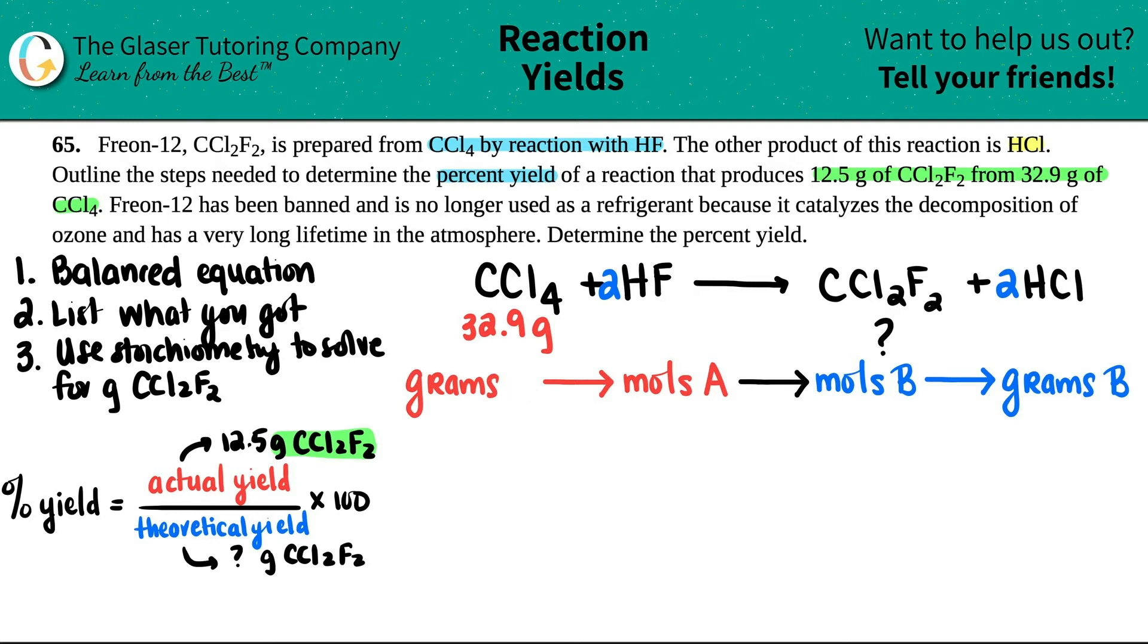So we have CCl4. We can go to moles of CCl4. And then from there, we can get the moles of the one that we want, so that's CCl2F2. And then from there, we can finally get the grams. And just know that this is my theoretical yield. So we're just putting like a fancy name to what we've been doing many times. And we're going to start off with the 32.9 grams. So let's get to it.